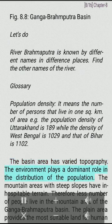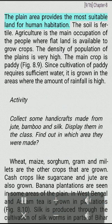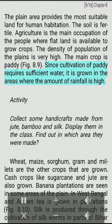The basin area has varied topography. The environment plays a dominant role in the distribution of the population. The mountain areas with steep slopes have inhospitable terrain, therefore fewer people live in the mountain area of the Ganga Brahmaputra basin. The plain area provides the most suitable land for human habitation. The soil is fertile. Agriculture is the main occupation where flat land is available. The density of population of the plains is very high. The main crop is paddy, and since its cultivation requires sufficient water, it is grown in areas where rainfall is high.